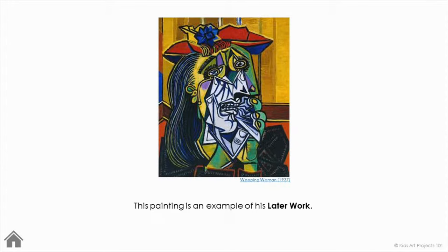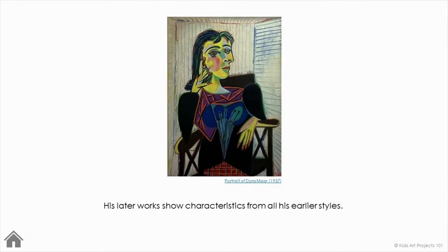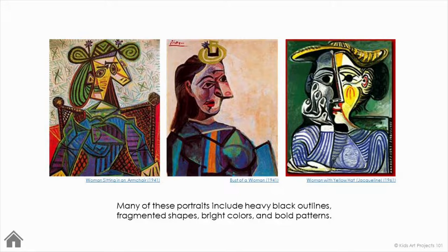Until he finally reached a period simply called his later work. This painting is an example of his later work. His later works show characteristics from all his earlier styles. He painted many portraits in this period. A portrait is an image which represents a person, a group of people, or even an animal. Many of these portraits include heavy black outlines, fragmented shapes, bright colors, and bold patterns.